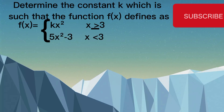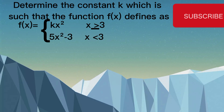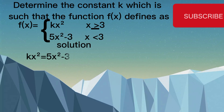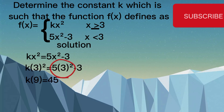Another example says: determine the constant k such that the function f(x) is defined as kx² for x ≥ 3, and 5x² − 3 for x < 3. To find k, set kx² equal to 5x² − 3, then substitute x = 3: k(3²) = 5(3²) − 3, so 9k = 45 − 3, giving 9k = 42.